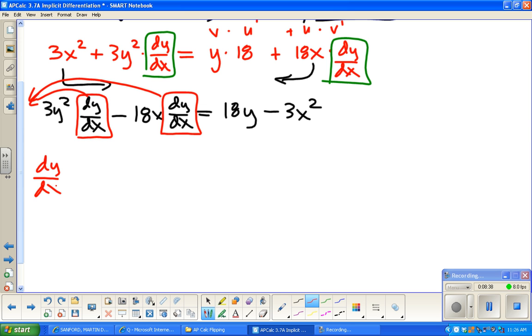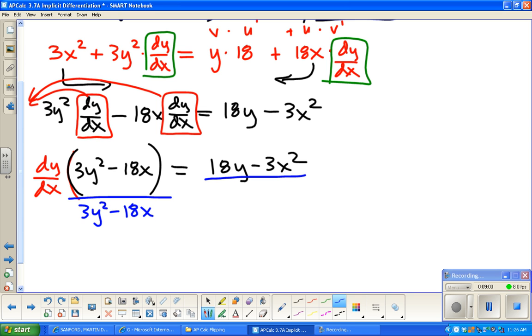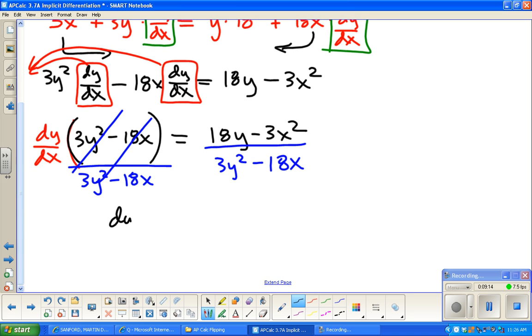So, 3y squared dy/dx. I'm subtracting 18x dy/dx from both sides equals 18y minus 3x squared. Now, again, I want dy/dx by itself. That means I need a single dy/dx. Well, these both have a factor of dy/dx. So, I'm going to factor them out. I'm going to undistribute them. So, dy/dx is coming out, and then the rest of it stays in. So, 3y squared minus 18x equals this. And then, again, the goal is to get dy/dx by itself. So, I'm going to divide both sides by this lovely other factor. So this cancels out. It divides out.